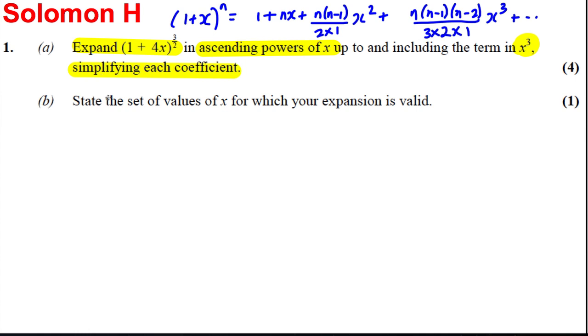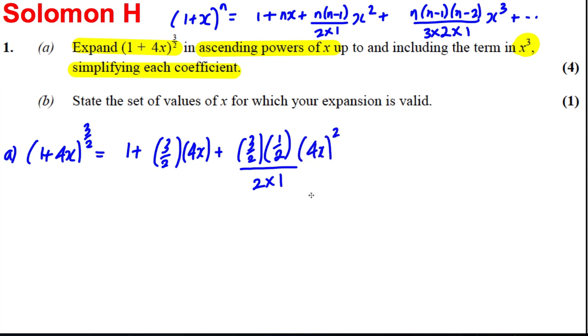Okay, so that's the formula we're going to use here. Let's have a go expanding this. So part (a): (1 + 4x)^(3/2) = 1 + n which is 3/2 multiplied by 4x, plus (3/2)(3/2 - 1) which is a half, all of that over 2 × 1, (4x)² all squared, plus